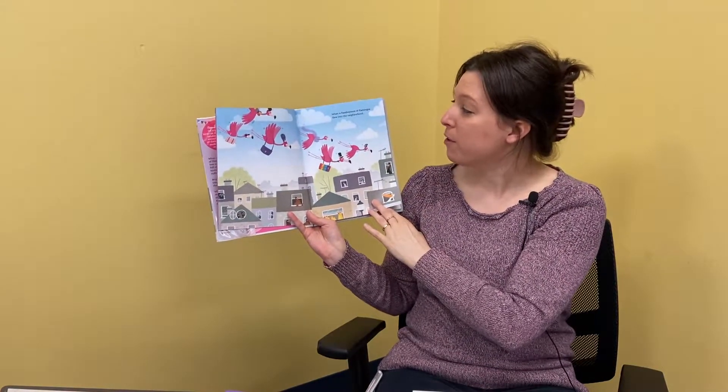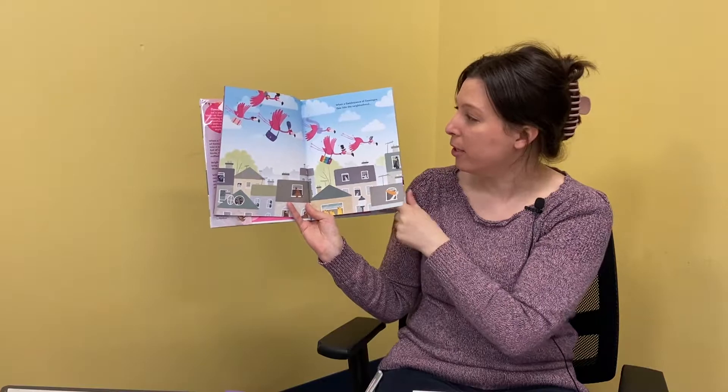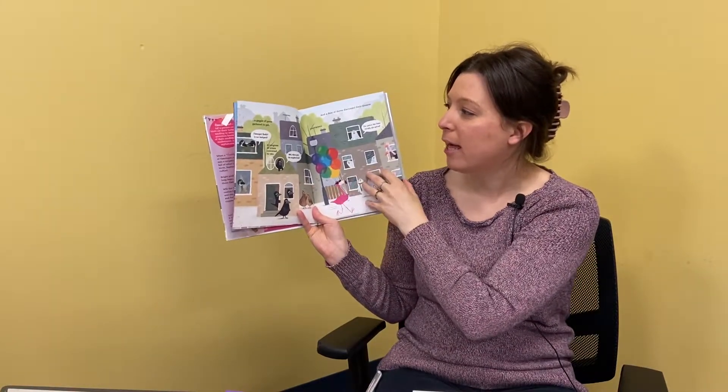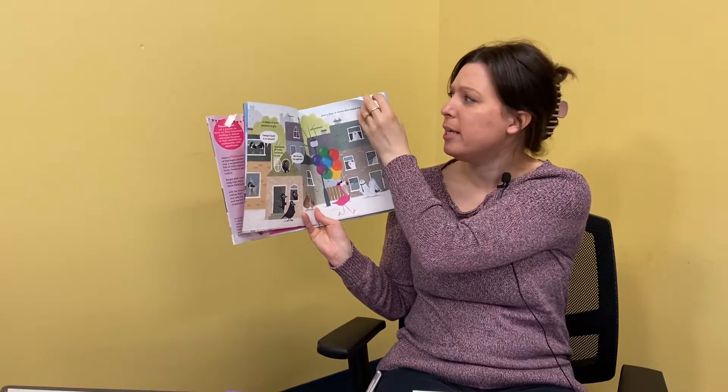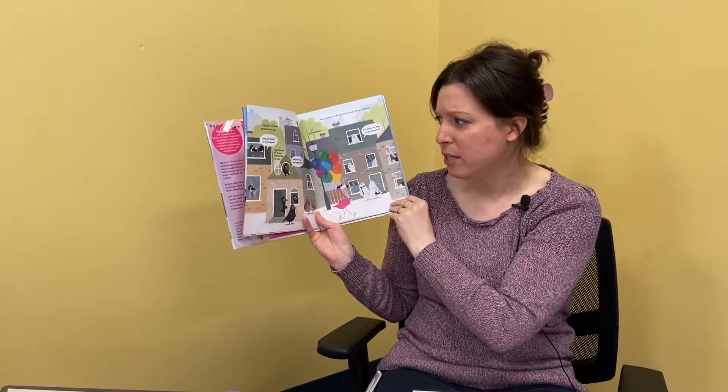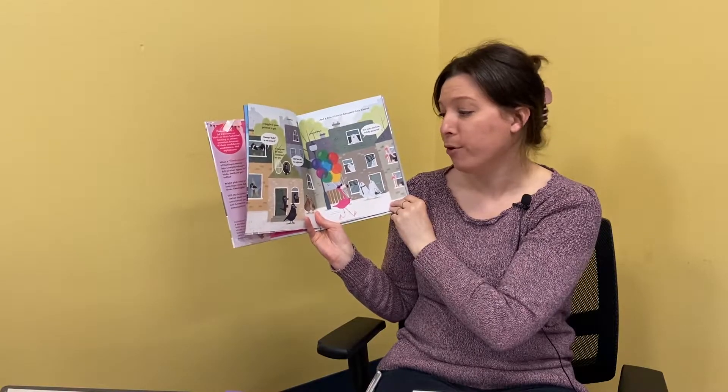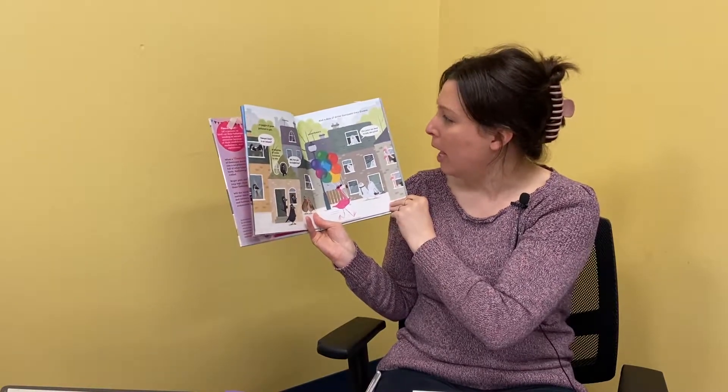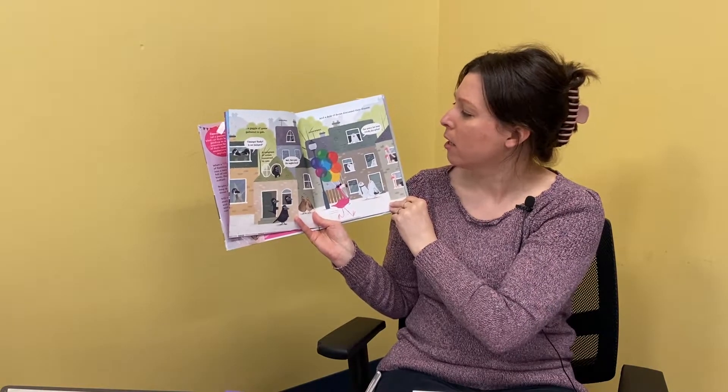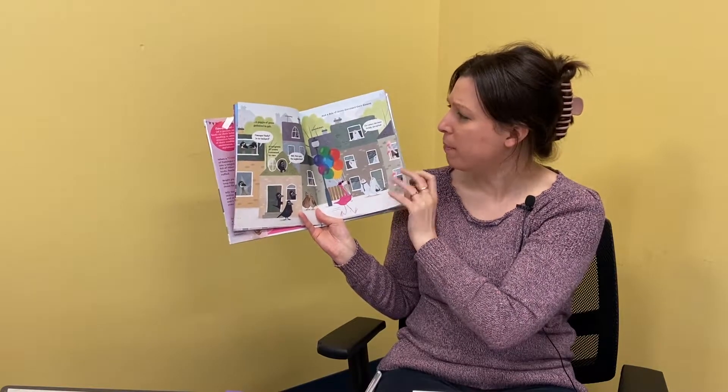When a flamboyance of flamingos flew into the neighborhood. A gaggle of geese gathered to gab. Flamingos, really? In our backyard? A congress of crows convened to caw. Well, there goes the neighborhood. And a dole of doves disgust their descent. Our peace has been totally disrupted.